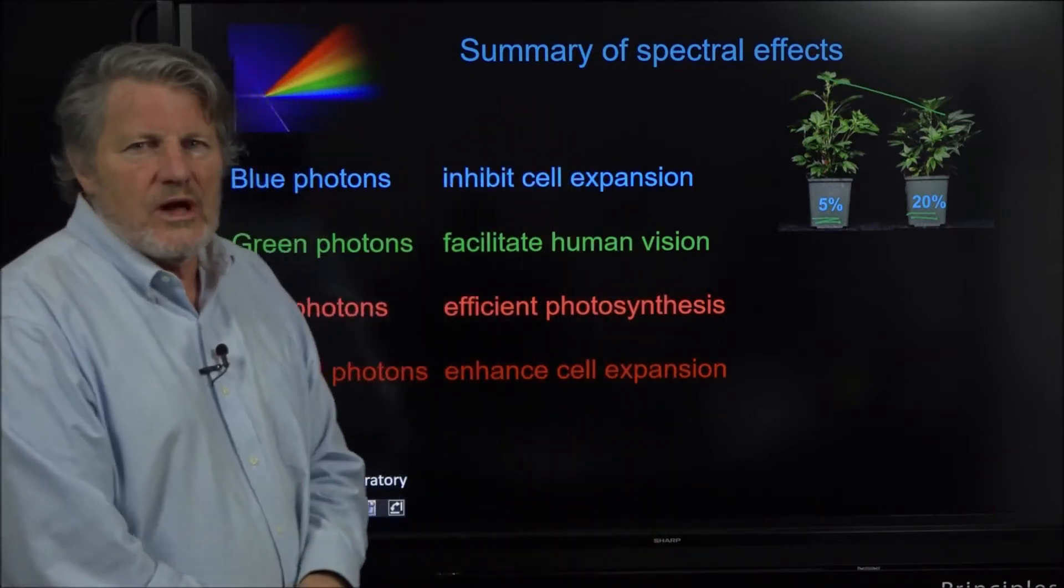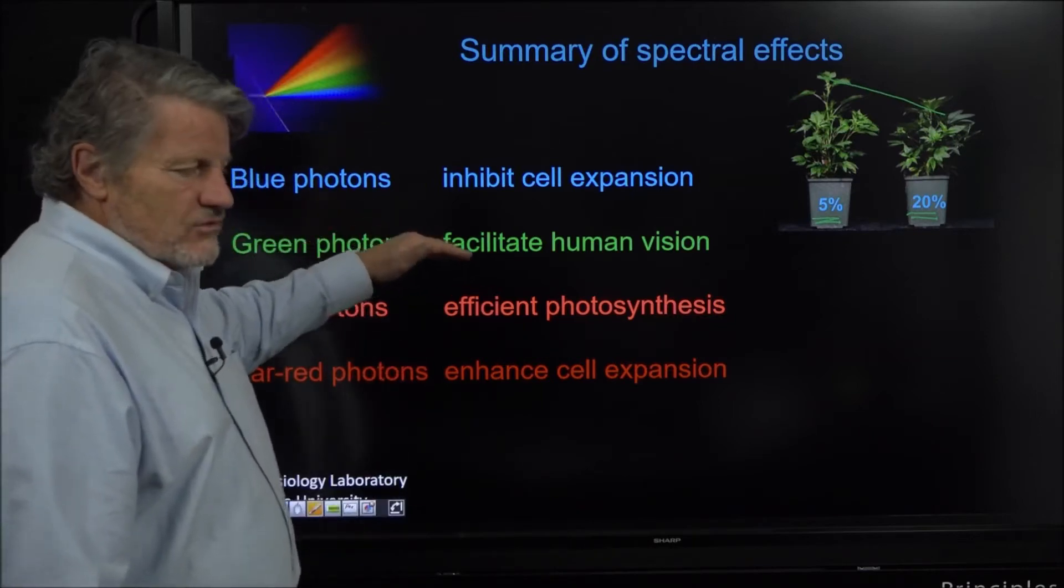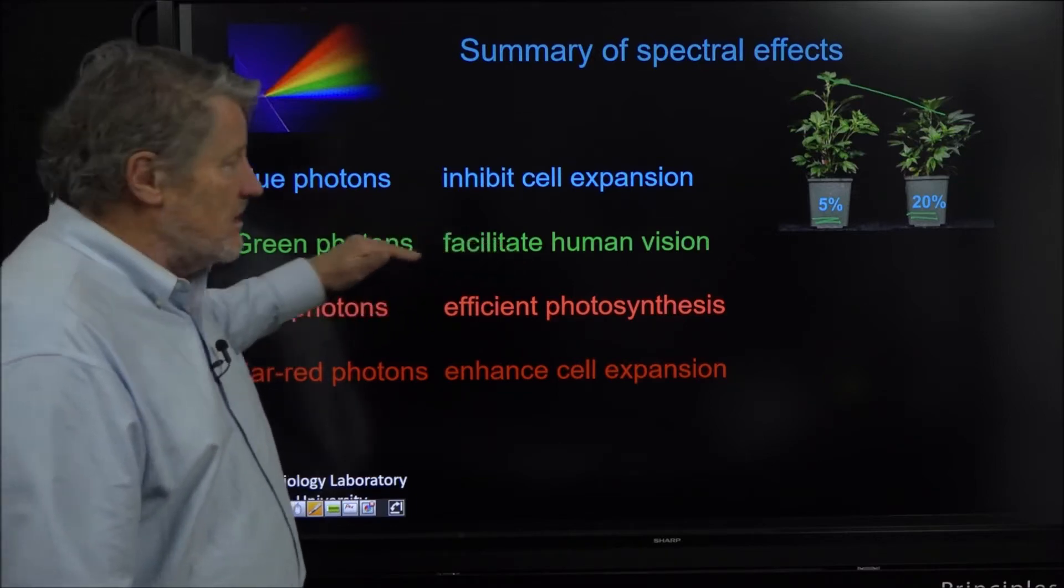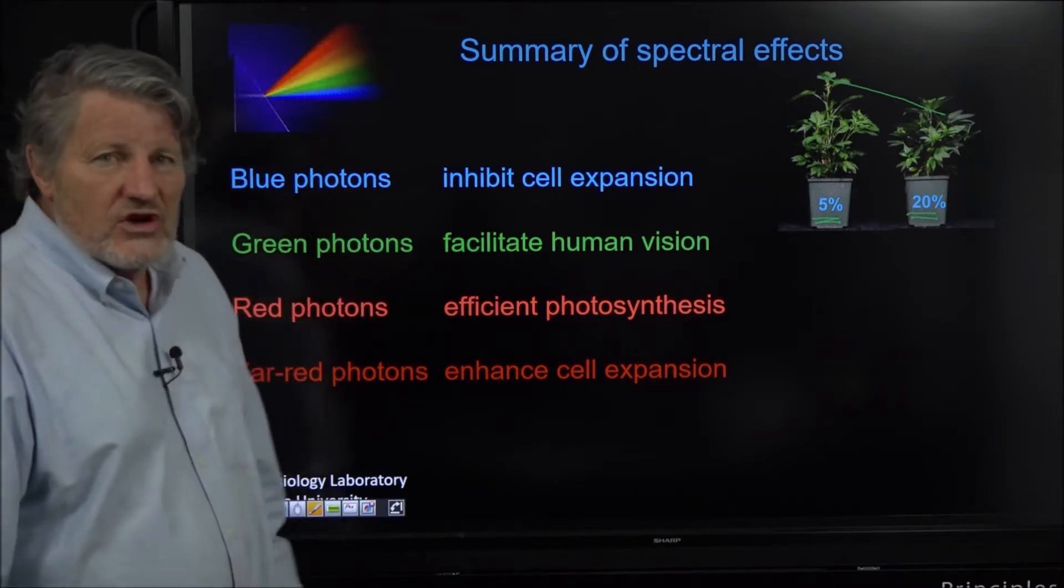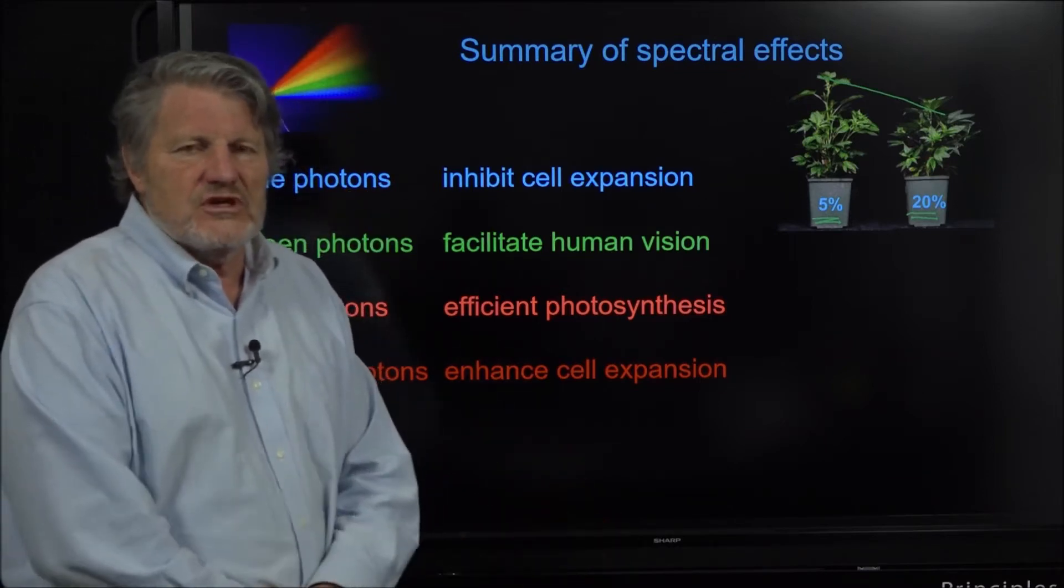Green photons are like fertilizer because we can see the plants and diagnose problems. In the early days of LEDs there was a misperception that green photons were not used efficiently and we made LEDs with blue and red photons and that led to lots of problems - we have purple plants you couldn't see them.